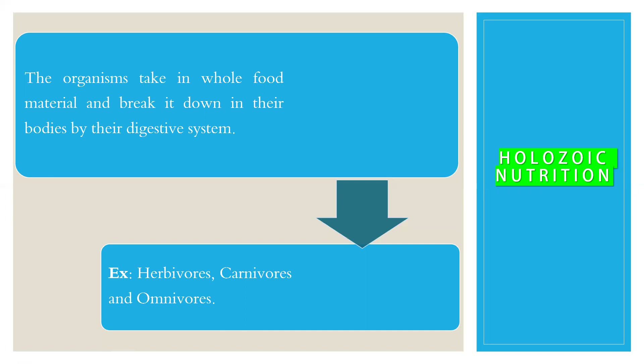Holozoic mode of nutrition takes place in all the higher animals. In higher animals, there is a separate organ system for digestion. The digestive system breaks complex food materials into simpler substances. Digestion means the conversion of complex food materials into simpler substances. Examples of holozoic nutrition are herbivores, carnivores, and omnivores.